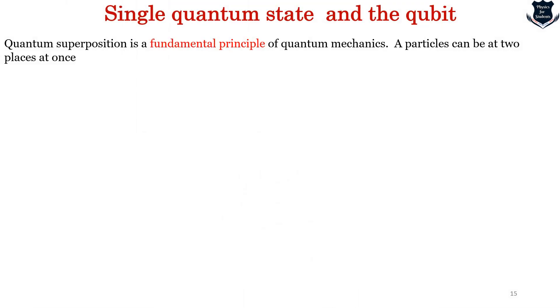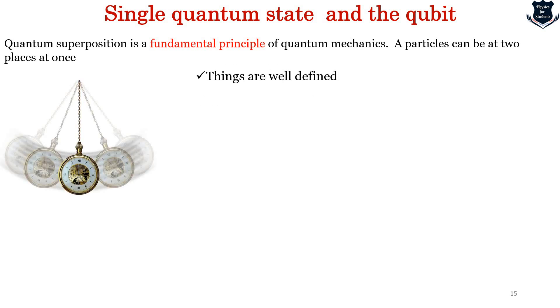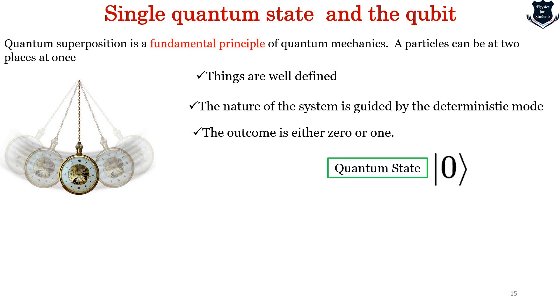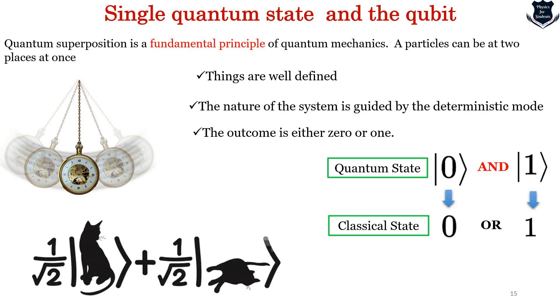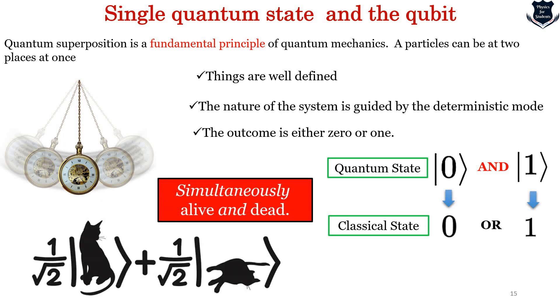Quantum superposition is a fundamental principle of quantum mechanics. A particle can be placed at two places. Classically, we cannot do that because in classical mechanics things are well-defined, the nature of the system is guided by deterministic mode, and the outcome is either 0 or 1. In quantum state, this is 0 and 1 - it is AND. But in a classical state, this is 0 or 1, meaning it has to go from one place to another. If you remember the famous Schrödinger's cat, which is simultaneously alive and dead, that gives us an understanding why it is called as alive as well as dead. The quantum state actually exists in both places, and that is what is called superposition.